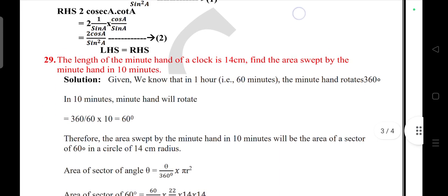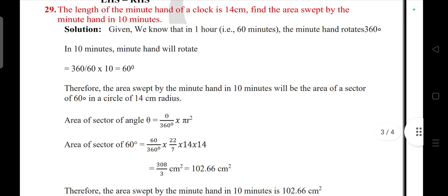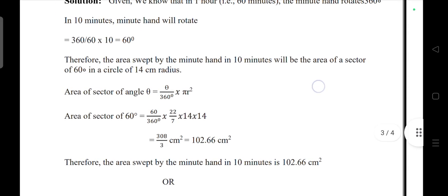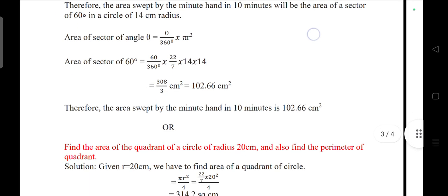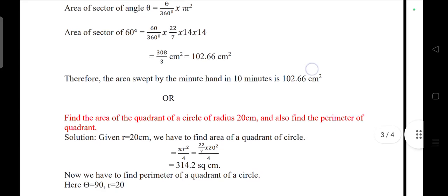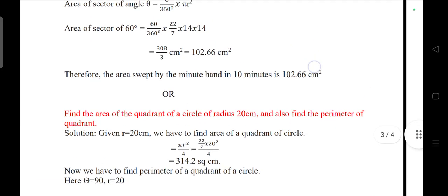Question 31: The length of the minute hand of a clock is 14 centimeter. Find the area swept by the minute hand in 10 minutes. Or, find the area of the quadrant of a circle of radius 20 centimeter and also find the perimeter of the quadrant.